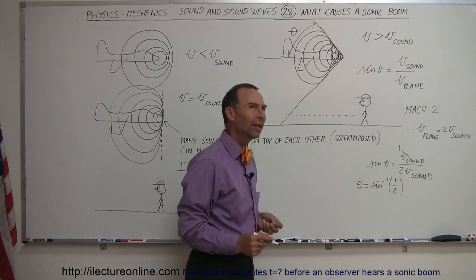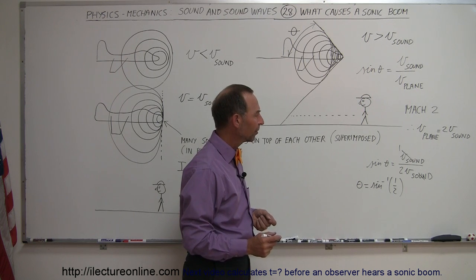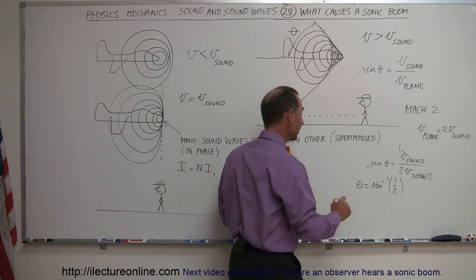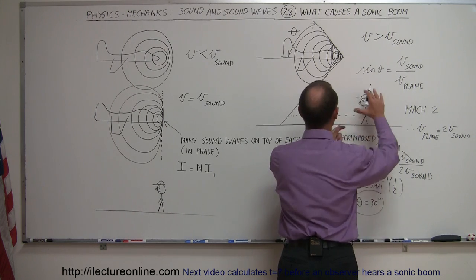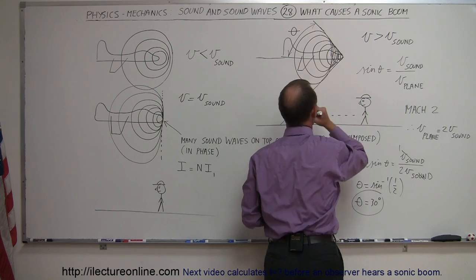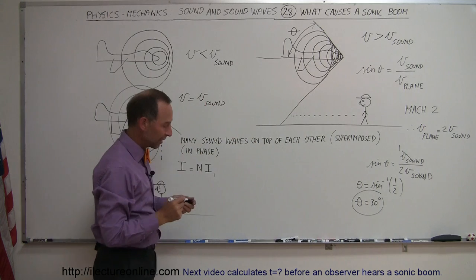And when is the angle, the sine of an angle equal to one-half? That means that theta has to be 30 degrees. So that means we have a cone-shaped region where the angle here is 30 degrees. That's how we figured that out.